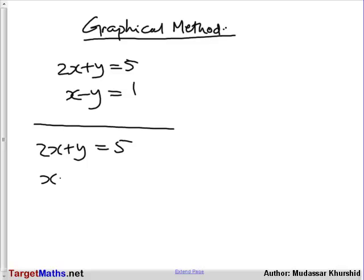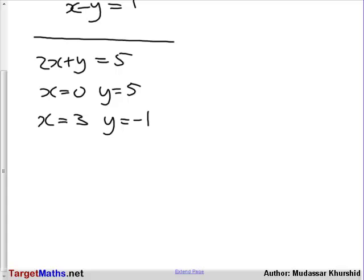Let's work out two points for each line. Taking the first equation, 2x plus y equals 5: when x equals 0, y will equal 5; and when x equals 3, y will equal minus 1. For the second line: when x equals 0, y will equal minus 1; and when x equals 5, y will equal 4.